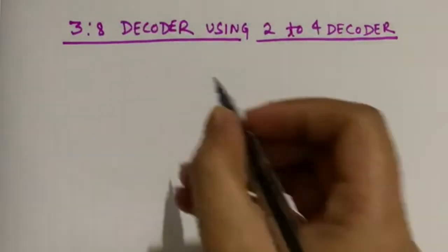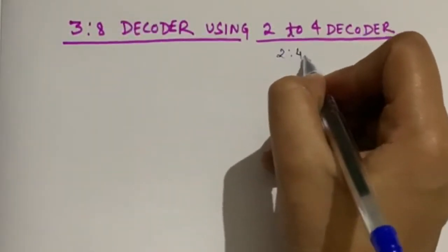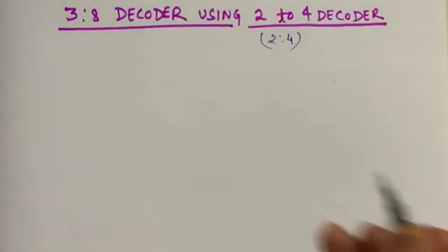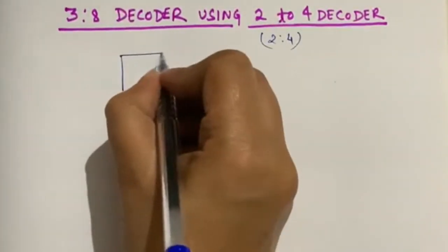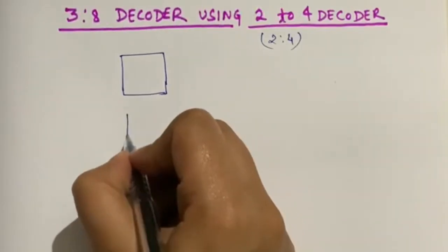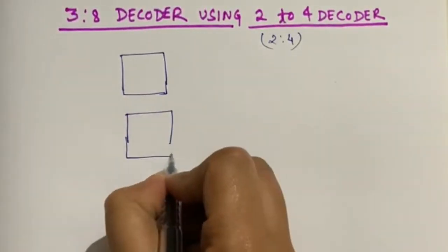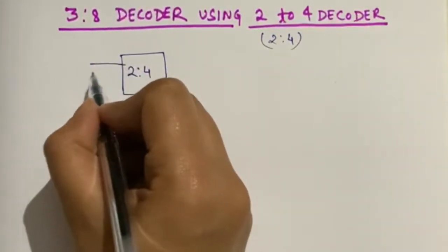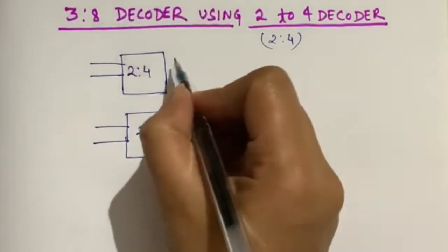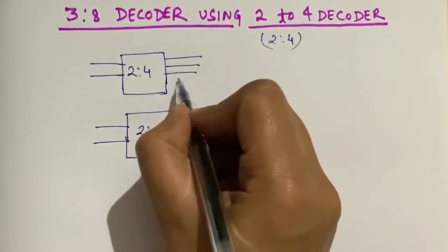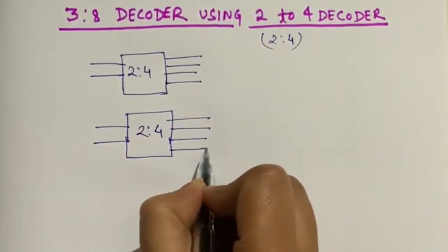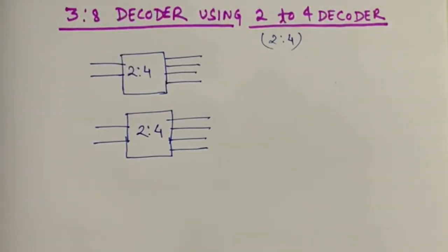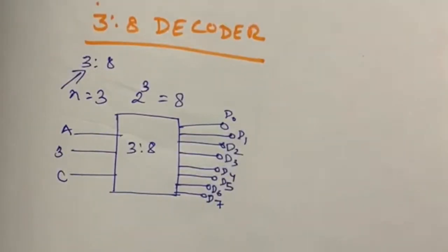To build a 3-to-8 decoder, we will need 2 number of 2-to-4 decoders with enable. Each has 2 input lines and 4 output lines. We specifically need the version with an enable input.